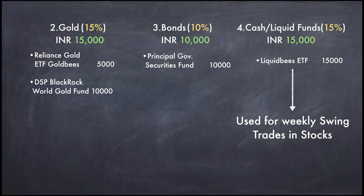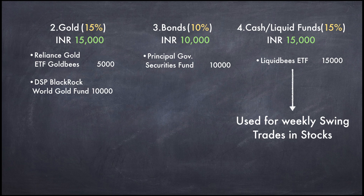For the 15% gold allocation, I choose Reliance Gold ETFs — I have invested 5,000 rupees there — and I have invested 10,000 rupees in the DSP World Gold Fund. In 2015, when the stock market collapsed in China, the DSP World Gold Fund doubled its value. An investment of 10,000 at the beginning of 2015 would give you roughly 19,000 rupees, because it gained 98% that entire year by the beginning of 2016. That is why I invest in gold.